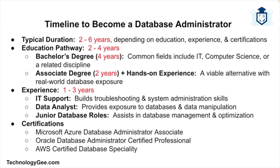Now let's talk about the timeline it would take for you to become a database administrator. Becoming a DBA takes about two to six years, depending on education, experience, and certifications. If you go the traditional education path, this could take you about two to four years. Many DBAs have a bachelor's degree in IT, computer science, or a related field, which takes about four years. However, an associate's degree, which takes about two years combined with hands-on experience, can also be a viable path.